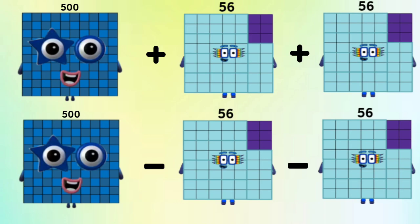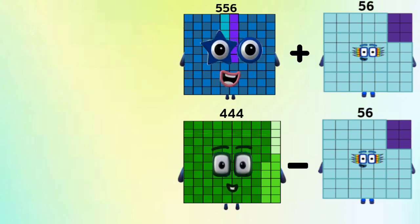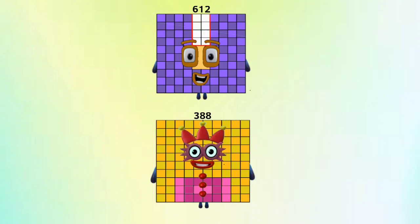Number Blocks 500 plus and minus Number Blocks 56 equals Number Blocks 556 and 444. Number Blocks 500 plus Number Blocks 56 and Number Blocks 444 minus Number Blocks 56 equals Number Blocks 612 and 388.